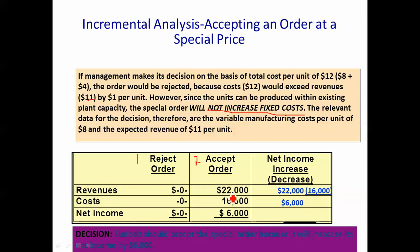On the cost side, if I reject the order I have no additional costs. But if I accept, I only incur variable costs — I don't need to add more fixed costs. So it's $8 times 2,000 units, which is $16,000. The net difference is $6,000 if I accept this order, so we should accept it. That's the incremental analysis technique for deciding whether to accept a special order.